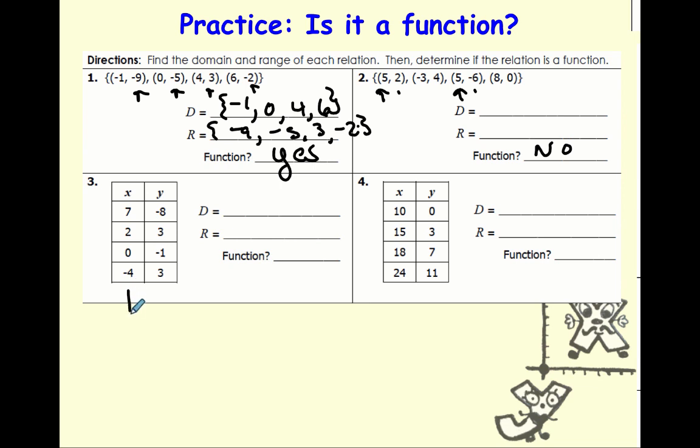On a table of values, this is already a list of our domain and this is already a list of our range. So let's just look at are these functions. I don't see any repeats in my x's, which means even if all the y's were exactly the same, it has to be a function. But over here, 10, 15, 18, 24, still no repeats in my domain. So yes, it's a function.